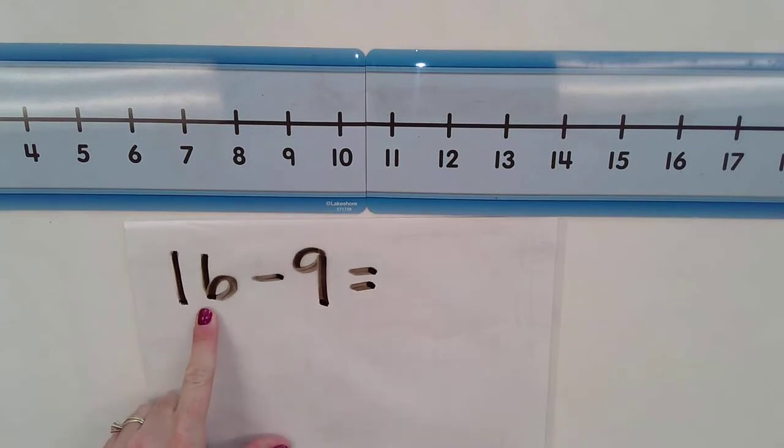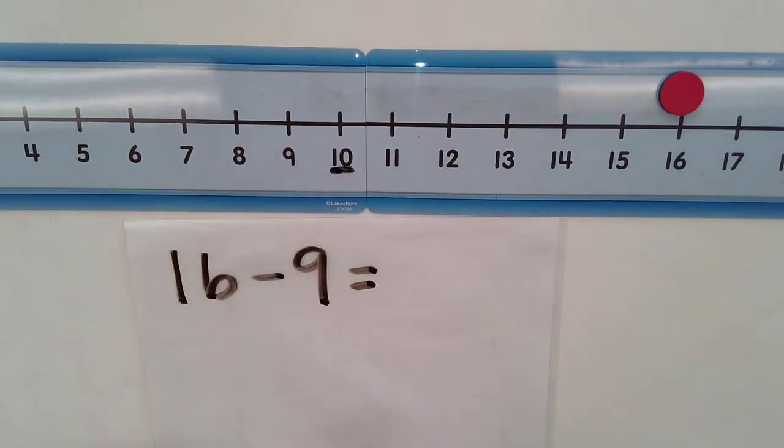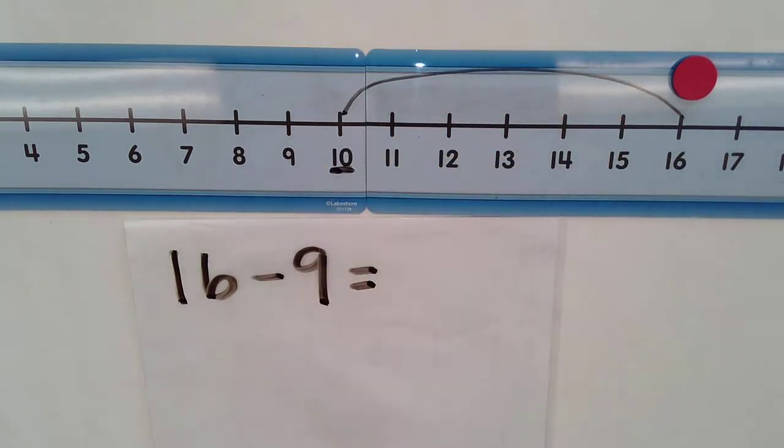So again, I'm going to start with my 16 and I'm going to find it on the number line. And then I'm going to find 10 on my number line. And I know if I go from 16 all the way to 10, I've made a jump of 6.